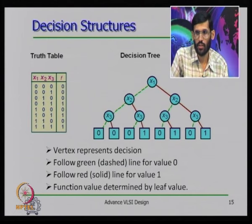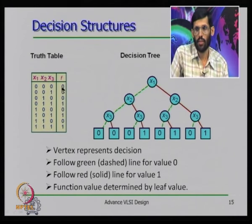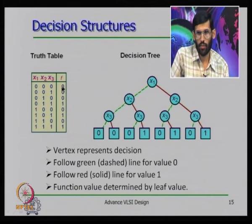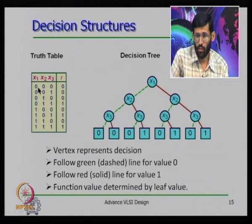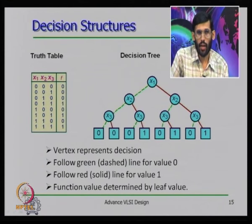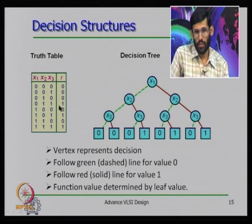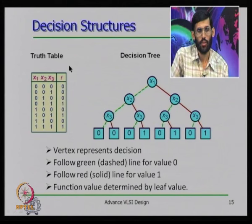The number of paths equals the number of truth table entries, making it impractical for large inputs. The truth table has 8 entries, but the binary decision tree has 8+4+2+1 = 15 nodes and 15 edges — much larger than the truth table. However, there are minimization techniques to address this.